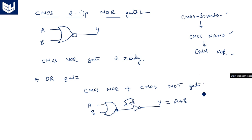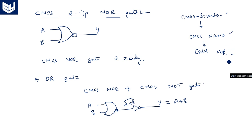That is why in CMOS logic circuit design the primary gates are inverter, NAND, and NOR. NAND and NOR are also universal gates, meaning any logic gate can be realized using them alone — which is another key reason they are fundamental in CMOS design.